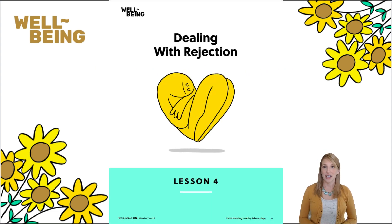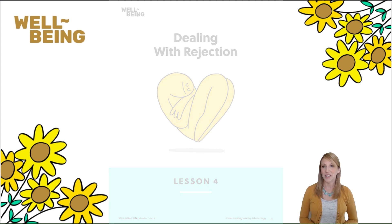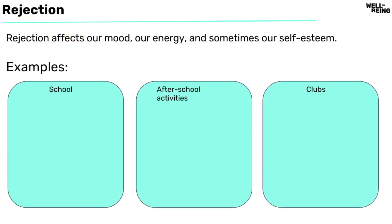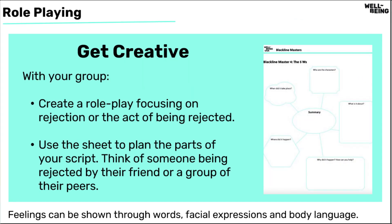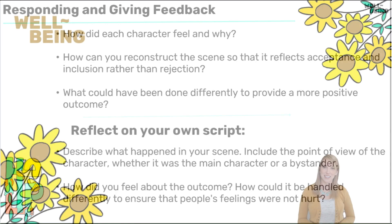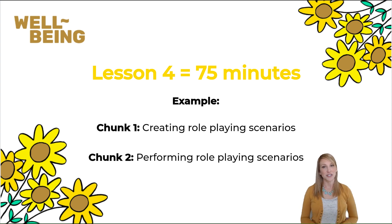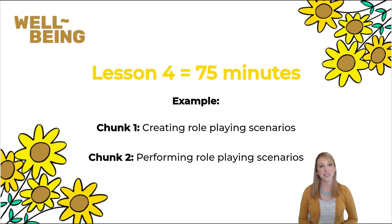Lesson 4 is Dealing with Rejection, and explores rejection in different roles and relationships and their impact. This can be a sensitive topic. There are additional resources in the lesson package, as well as on the Education Plus website, that can help you navigate through this topic. Students will again be role-playing, which is a great way for them to express themselves in a creative manner. It's important to set up expectations for the content and how students provide feedback on each other's performances. For this lesson, we also recommend 75 minutes. It might be helpful to divide the lesson into two parts — one for creating the role-playing and a separate lesson to perform them. You may need copies of Blackline Master 4 for students to plan their role-playing script.